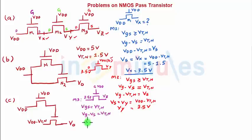And hence Vs, which is Vz, equals Vg minus Vtn. Gate voltage for M3 is also VDD, so it's VDD minus Vtn, which is 5 minus 1.5, and it's equal to 3.5 volts.